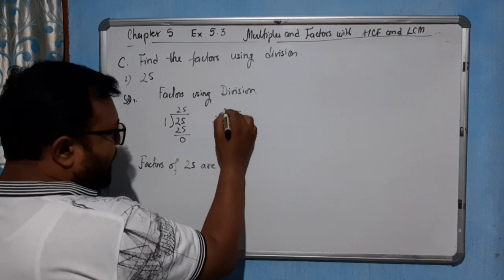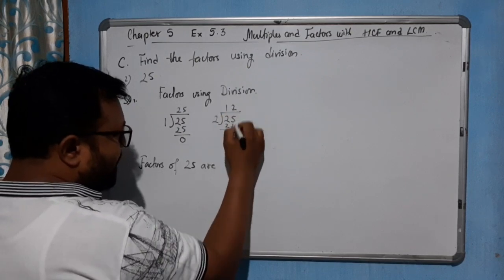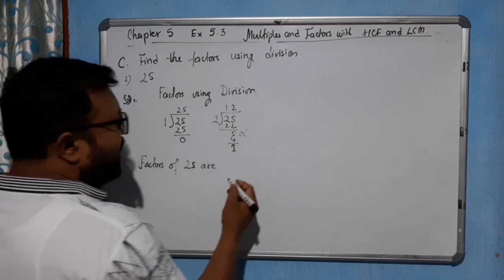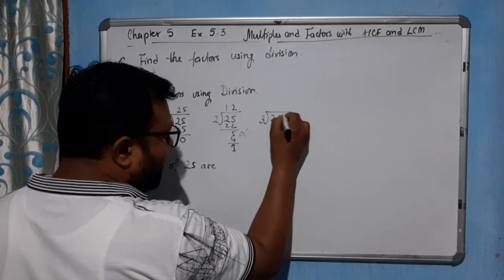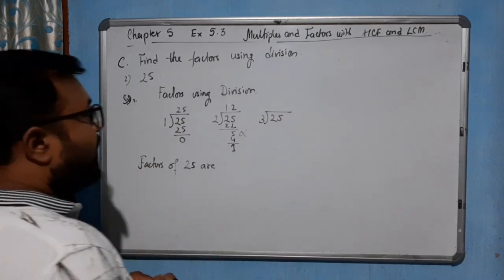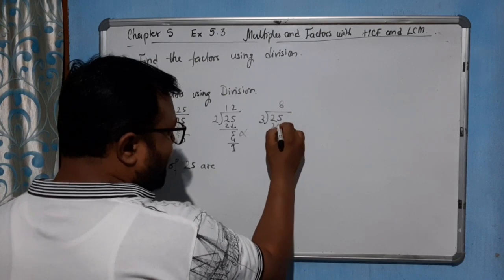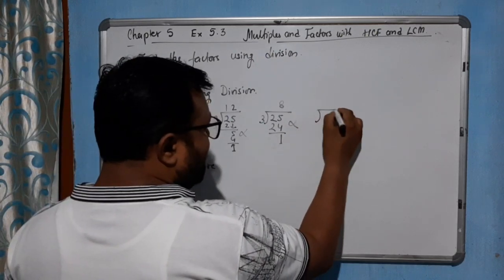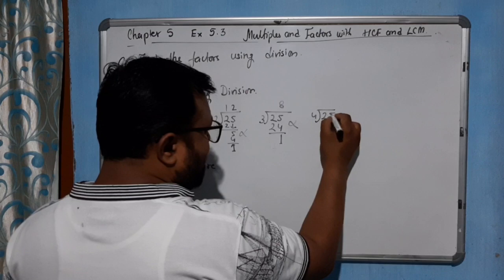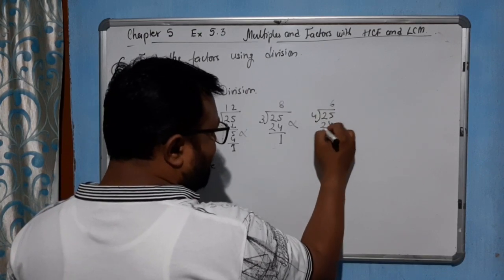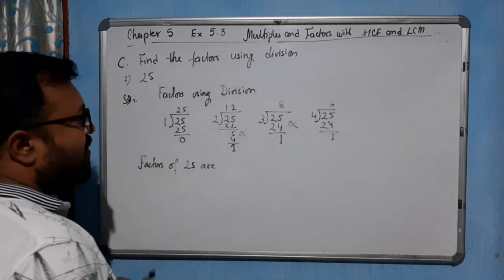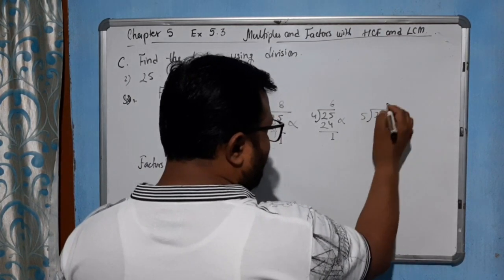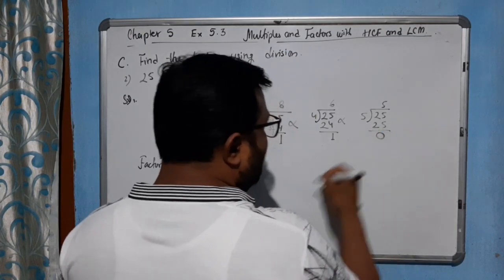By 2 — 25 divided by 2 gives remainder 1, so not possible. By 3 — 3 times 8 is 24, remainder 1, not possible. By 4 — 4 times 6 is 24, remainder 1, not possible. By 5 — 25 divided by 5 is 5, remainder 0. So 5 is a factor.